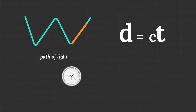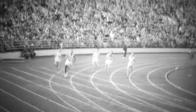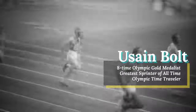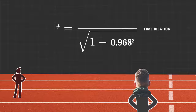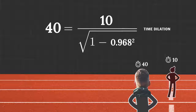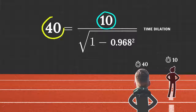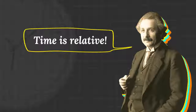So, moving clocks run slower. And the faster you run, the slower your clock ticks. In Olympic races, Usain Bolt is actually the best time traveler. If he ran at 96.8% the speed of light and took 10 seconds to finish a race according to his clock, a stationary judge would record 40 seconds, to which he would obviously object. But their argument would be pointless since time is relative.